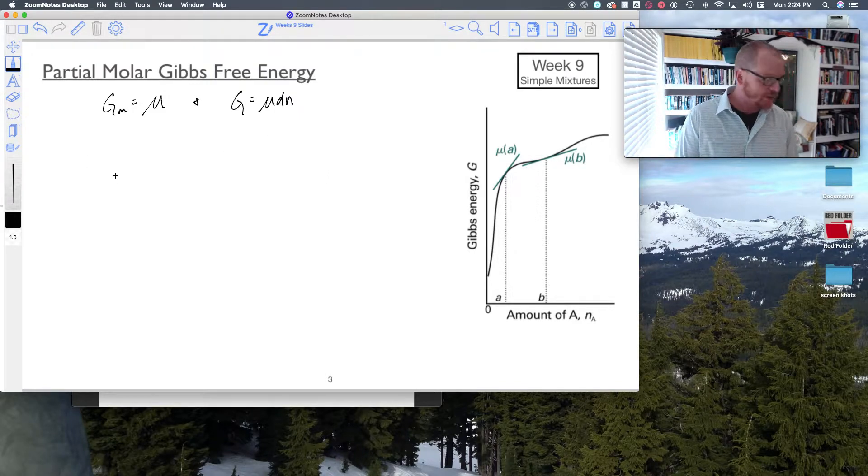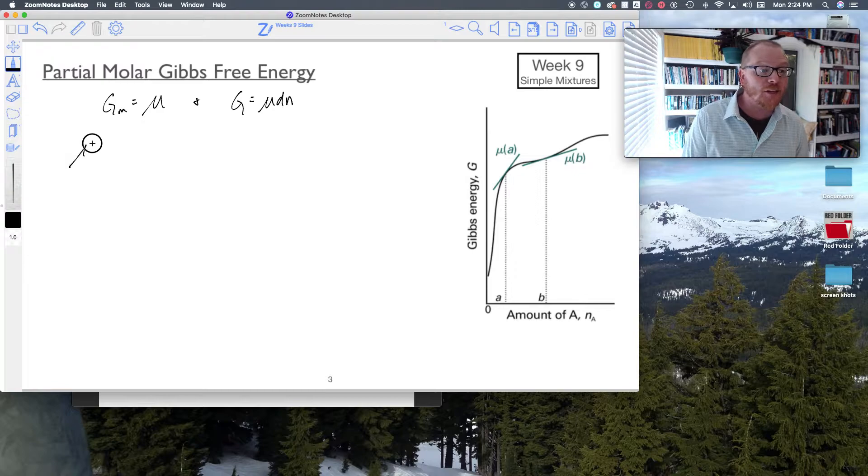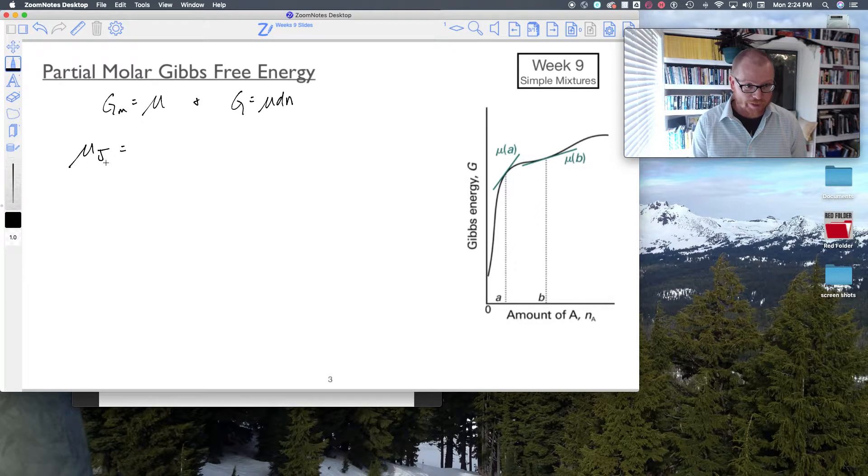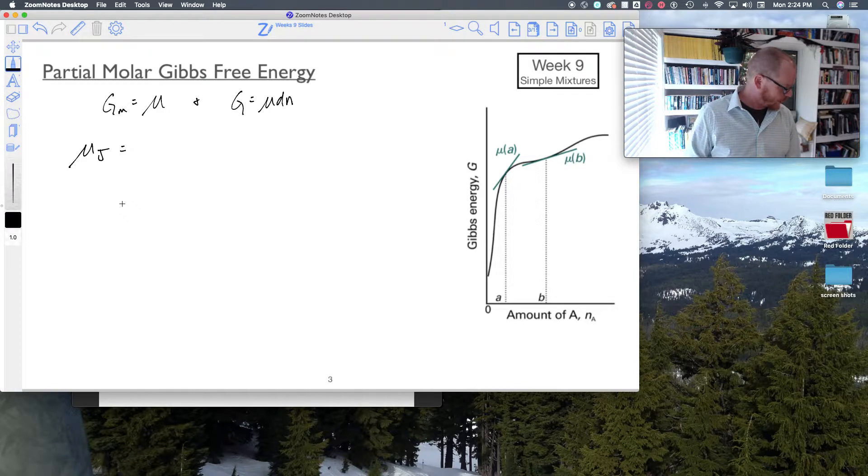And so what that means then, my chemical potential, believe it or not, is a partial molar quantity. So just plain chemical potential of species J, whatever it is—water, ethanol, whatever you want.